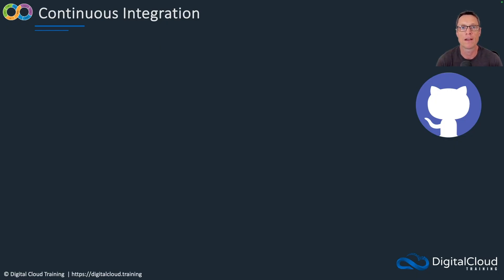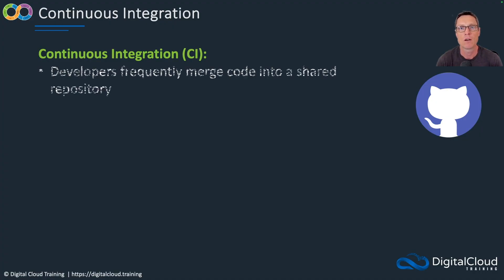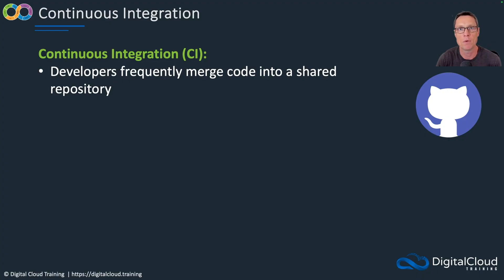Let's start off with the first part: CI, that's continuous integration. With continuous integration, developers are frequently merging code into a shared repository. You might have one or more developers working on a shared project, each able to make updates to relevant portions of code, and they can synchronize and merge that code into one place — that is called a repository, for example a GitHub repository.